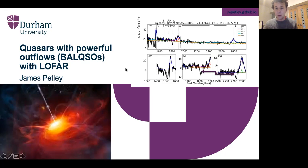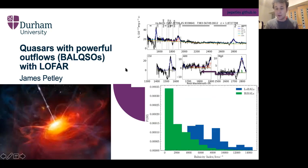We can characterize the strength of the outflows using the balunicity index, which is a measure that combines the breadth and depth of the absorption trough. We find that low BALs typically have much stronger outflows.